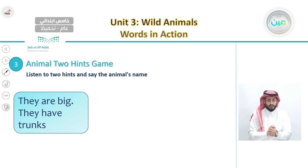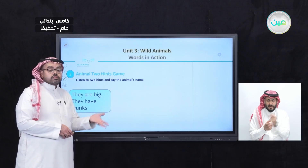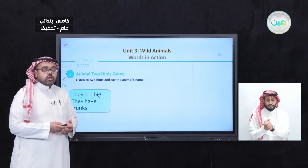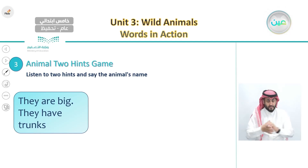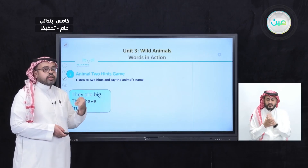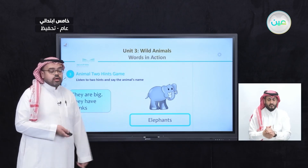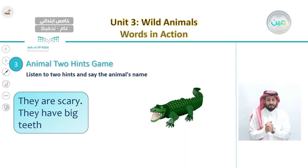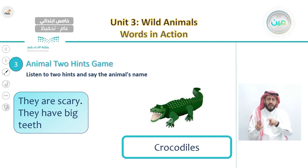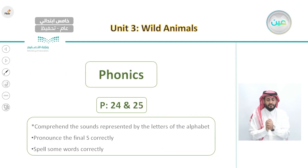We also learned a new game: I give two description hints about an animal and you guess what it is. For example, 'They are big and have trunks' — you'd say 'elephant.' I encouraged you to play this guessing game with classmates or friends, mentioning two descriptions and having them guess the animal. We practiced this with hippos, elephants, and crocodiles.